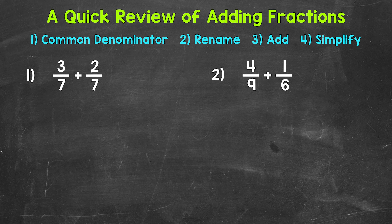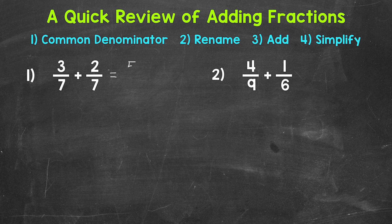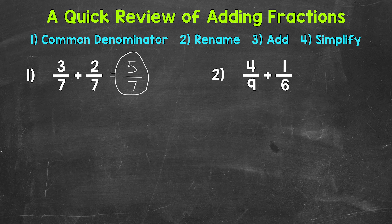Let's start with adding fractions and jump into number one, where we have 3/7 plus 2/7. When we add fractions, we have to have a common denominator, so we always look to see if our denominators are the same. In the case of number one, we have a 7 and a 7 for our denominators, so we have a common denominator right away. We add the numerators: 3 plus 2 is 5, and we keep our denominator the same. 5/7 is our answer, and it's already in simplest form since the only common factor between 5 and 7 is 1.